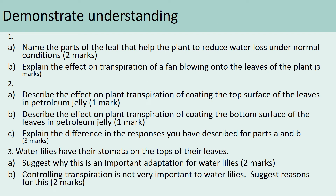We've got some exam-style questions here — three questions with parts. Question one, part A: name the parts of the leaf that help the plant reduce water loss under normal conditions. Question one, part B: explain the effect on transpiration of a fan blowing onto the leaves of the plant — that's worth three marks, so say what it will do to transpiration and why that will happen. Pause the video and have a go.